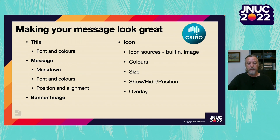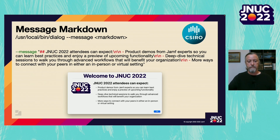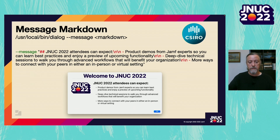That covers the basics of creating a dialog window, but there are other arguments to make your dialog look even better. You can select a different font, font color, or font size — for example, setting the color, size, and name to use in the title area. The message itself supports Markdown, which allows for very rich formatting. You can use Markdown to describe headers, paragraphs, and bullet points to present a list of items.